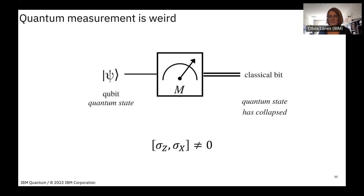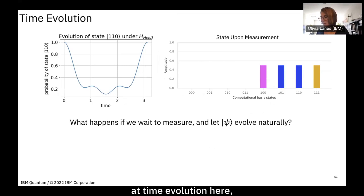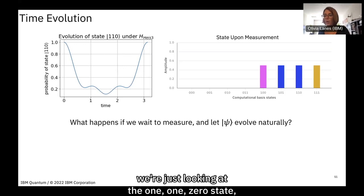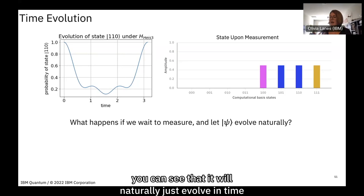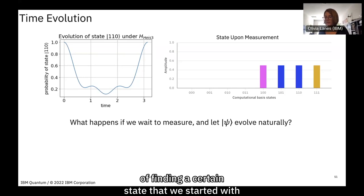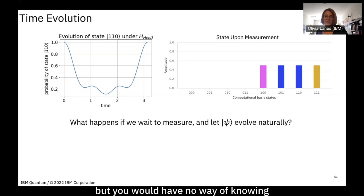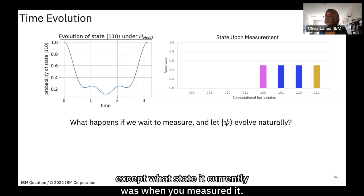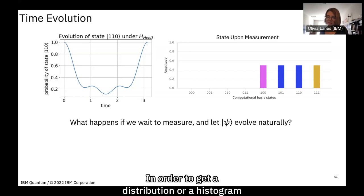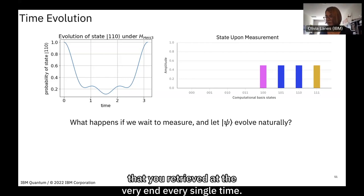Looking at time evolution: if we let a state — say |110⟩ — evolve without interacting with it, we see the probability of finding that state change over time. But if we perform a measurement, we collapse the state and lose information about its time evolution. To build a distribution or histogram of outcomes, we must run the experiment many times and plot the distribution of states retrieved each time.